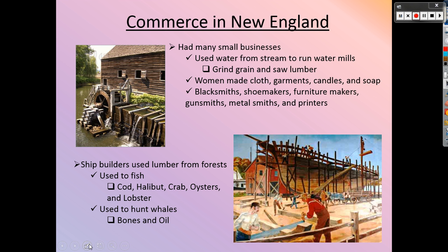In New England and the northern colonies, they would also have small businesses — not large ones, those come after the industrial revolution. Before machinery, they had to use water mills — basically a wheel that spins because water hits it, attached to an axle inside the building, which spins other wheels so you can grind grain and cut lumber. So they were able to have small shops: a blacksmith, a gunsmith to make weapons, a metalsmith, a cobbler — shoemaker — all sorts of small businesses.